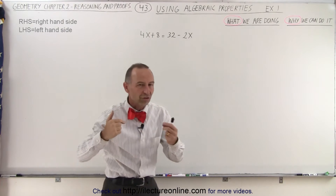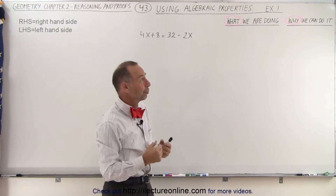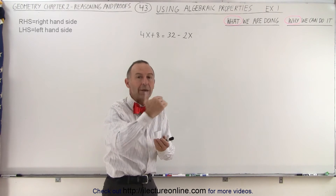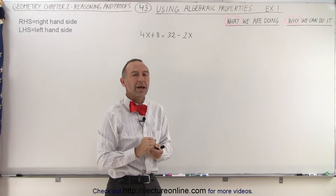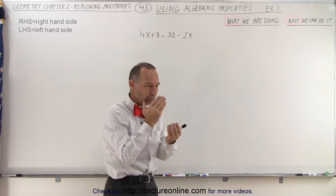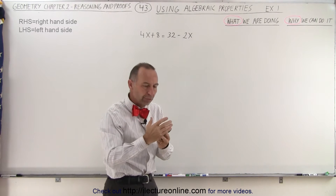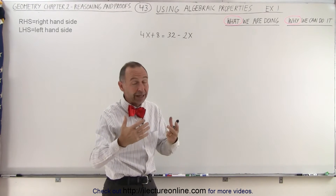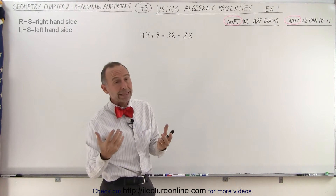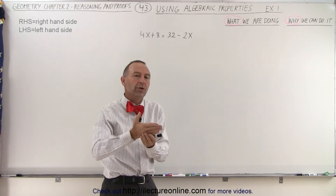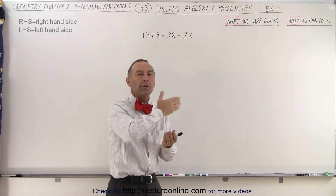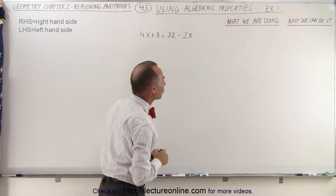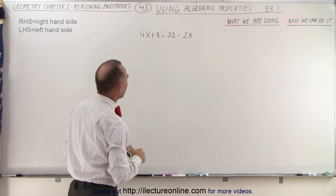That is the essential part of doing proofs: being able to justify why we can take that step. Is there some rule, some proof, some algebraic property — anything that can support the decision we made to do that? Let's try that and see what that looks like.